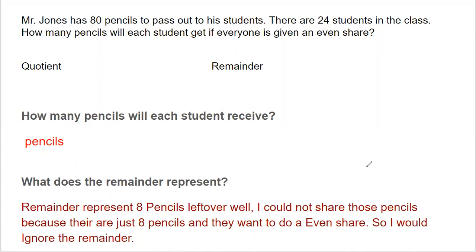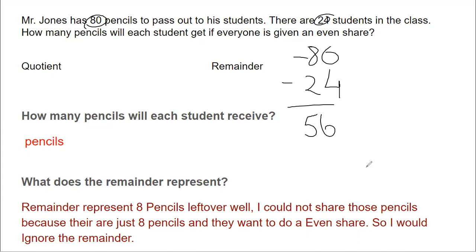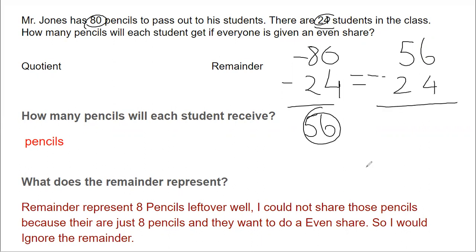All the students get at least one pencil because there are 80 pencils and 24 students. So all students will definitely get one pencil. If you do 80 minus 24, that gives 56. Now we do 56 minus 24 — we can still distribute one more pencil because 56 is bigger than 24. That gives us 32.